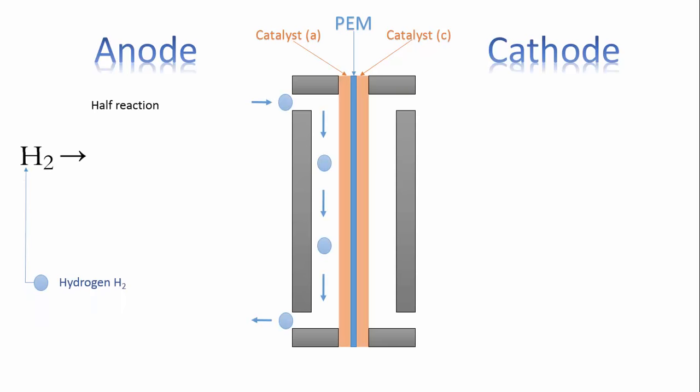Now see the anode half-reaction. Catalyst in the anode splits the hydrogen into two moles of protons and electrons. This is the anode half-reaction. As the name implies, the PEM allows the protons to travel through it and reaches the cathode catalyst layer, but it never allows the electrons.